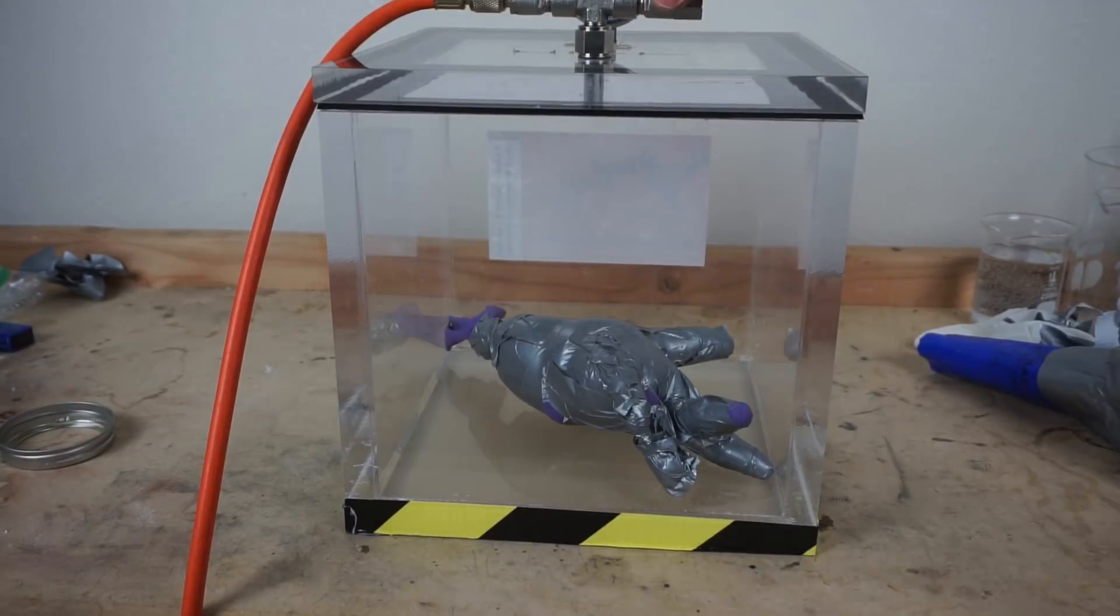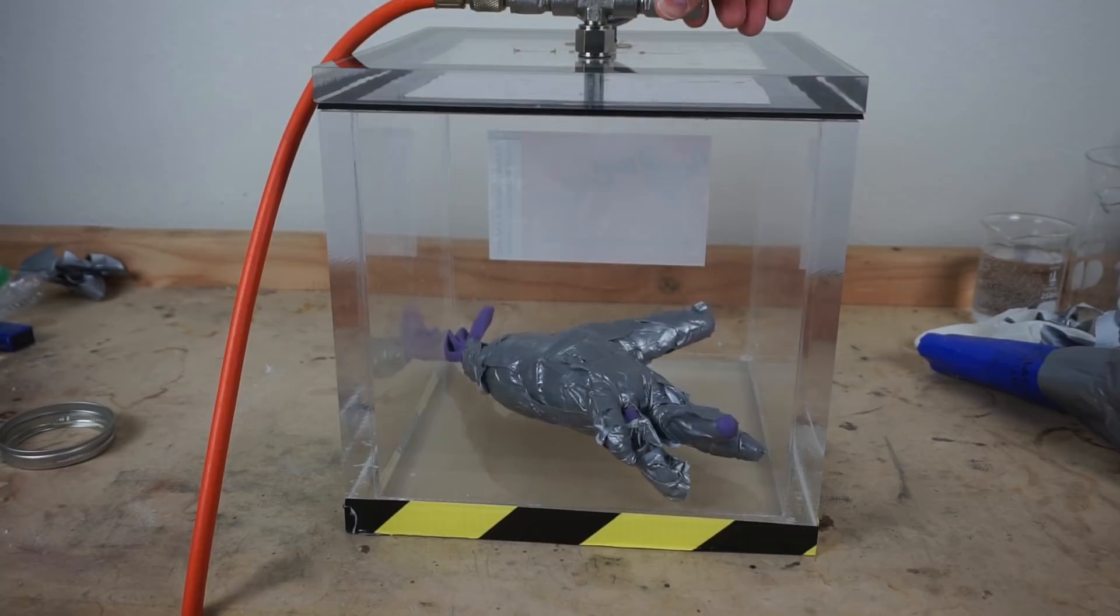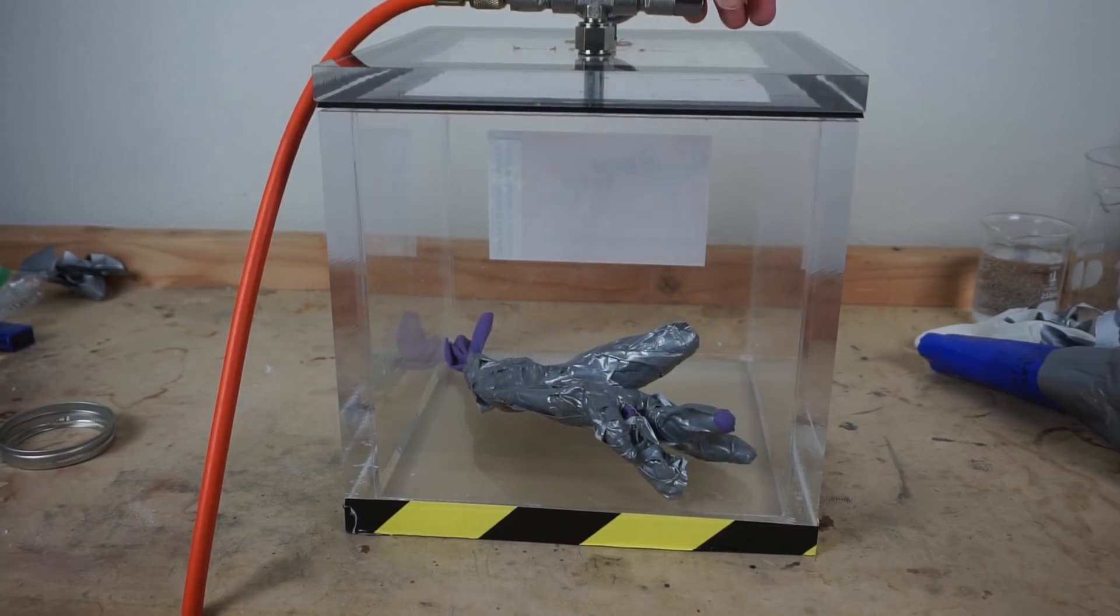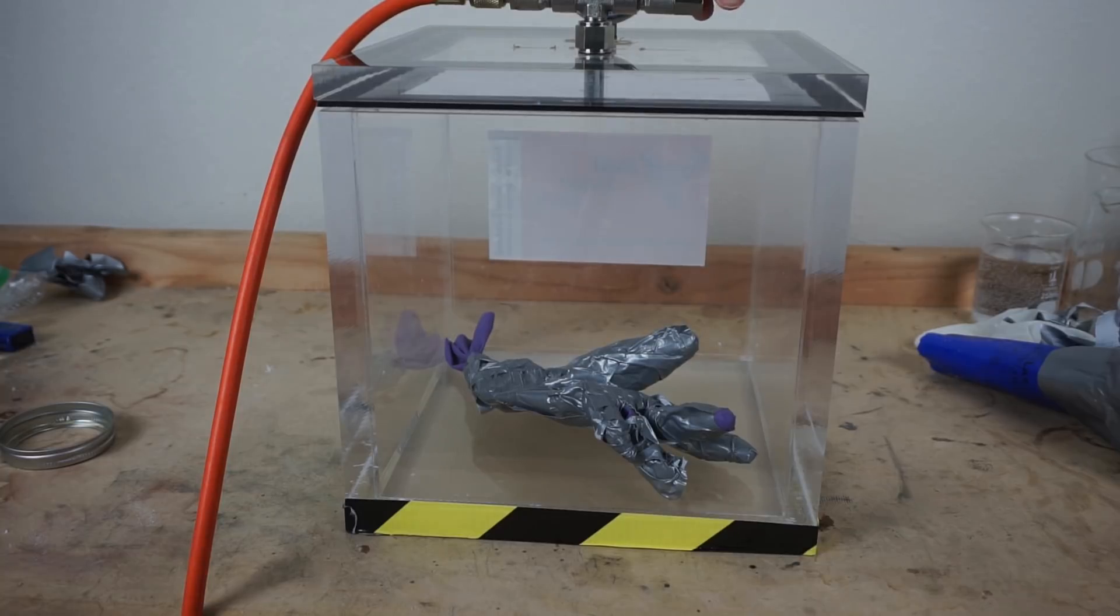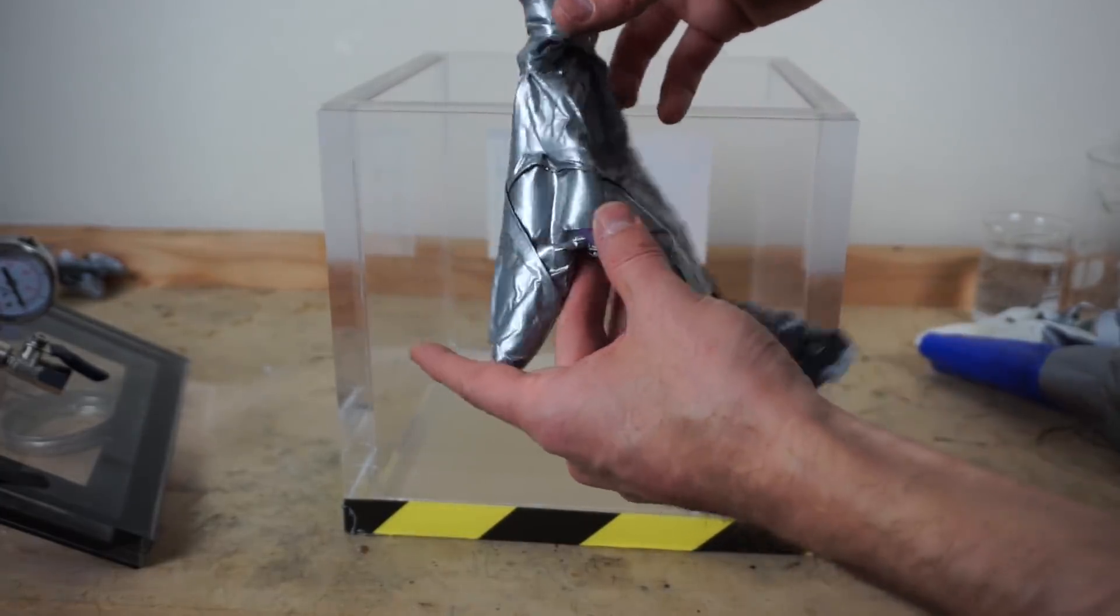Let's let the air back in. Three, two, one. Back to atmospheric. So you can see the glove is totally fine. No holes in it, and it's back to atmospheric pressure now.